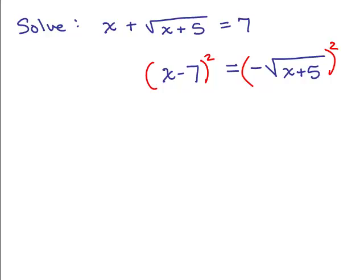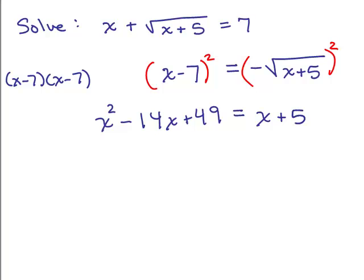On the left-hand side, either you know the formula for squaring a binomial or if you want you can always write x minus 7 times x minus 7 and do the FOIL method to get your answer. After doing the FOIL method, you should get x squared minus 14x plus 49 and on the right-hand side, when you square the negative 1 times negative 1, you just get a positive 1 and then you square the square root, you're just going to get what's underneath that which is x plus 5.